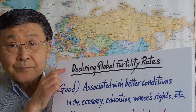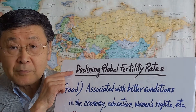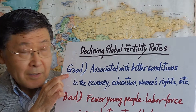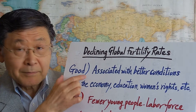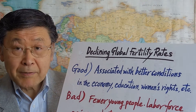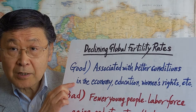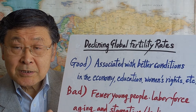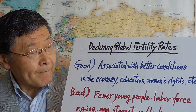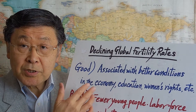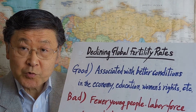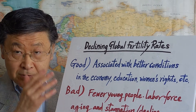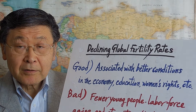How do we view this trend? There are two opposing views regarding the declining global fertility rate. Some say it is a good thing, because it has been associated with better conditions in the economy, education, and women's rights for family planning. Better conditions in these areas will further reduce the fertility rate — it is a positive cycle.